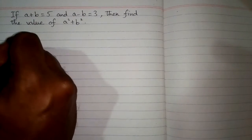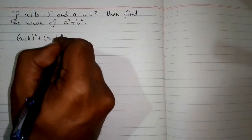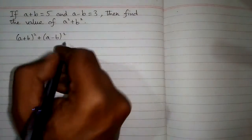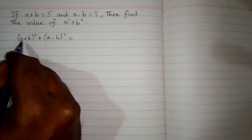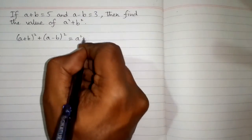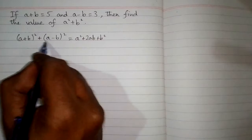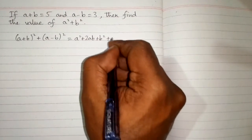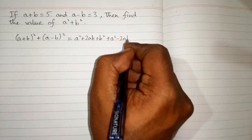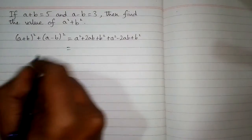One is (a+b)² and the other is (a-b)². So we will add these two identities. (a+b)² is equal to a²+2ab+b², and (a-b)² is equal to a²-2ab+b².